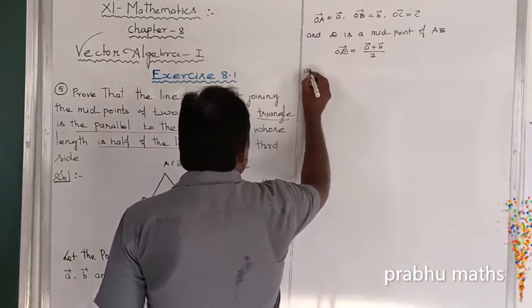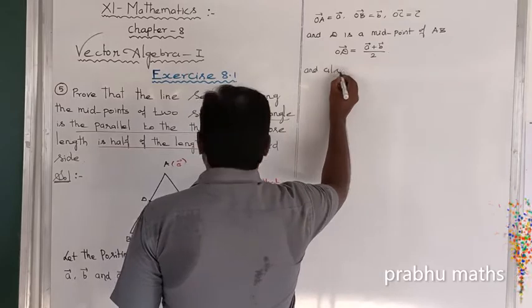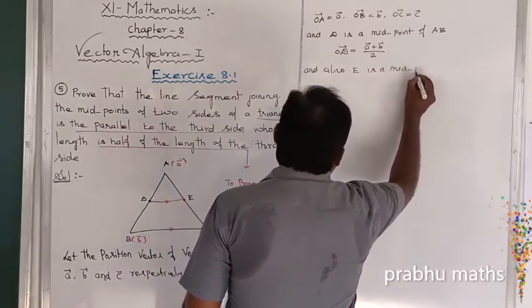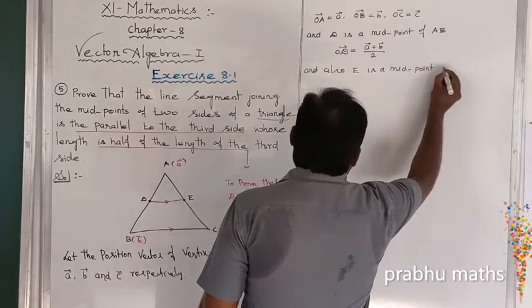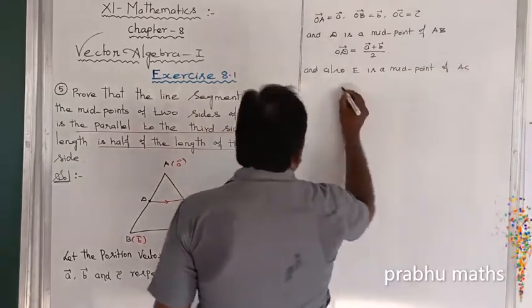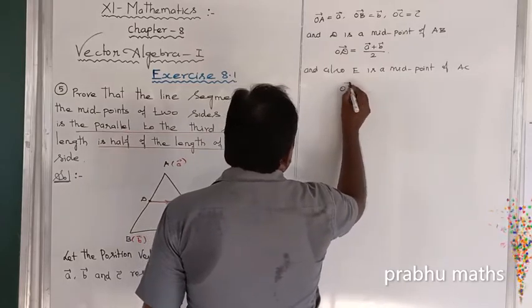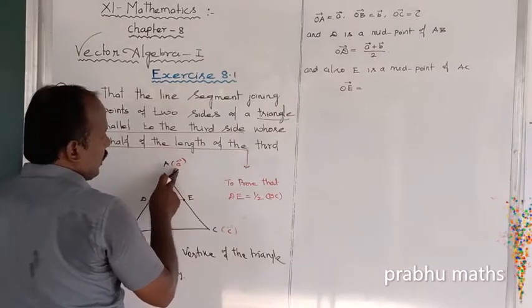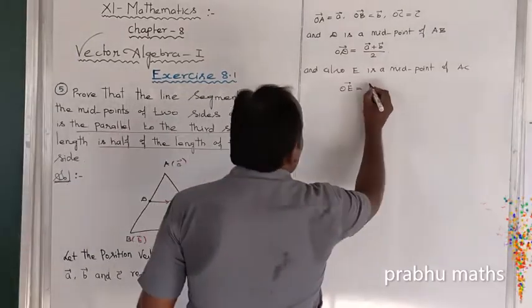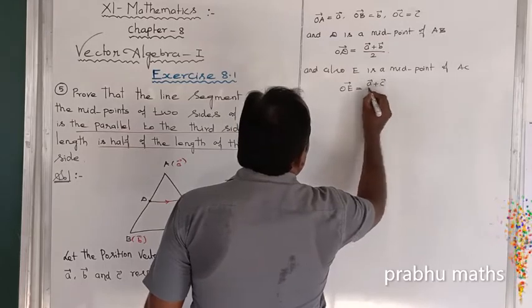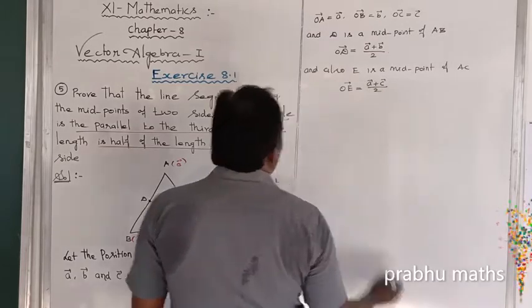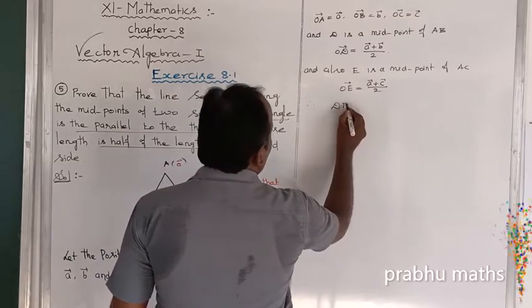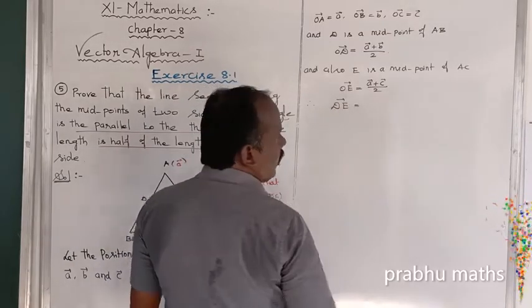Also, since E is the midpoint of AC, the position vector of E is: OE vector equals A vector plus C vector divided by 2.